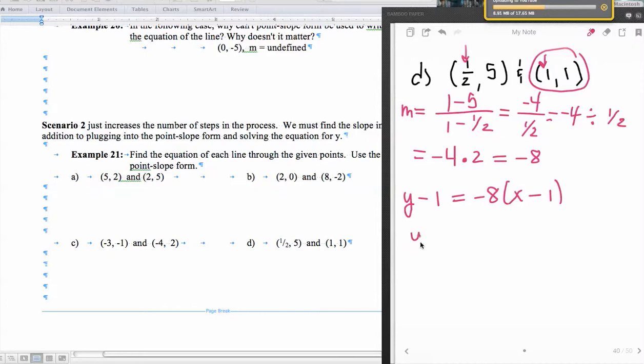And now I'll simplify. So y minus 1 is equal to, distributive property happens here and here. So negative 8 times x, which is negative 8x. And then negative times a negative, which is positive. So that's a positive 8. And then we're going to move the constant over. So we'll add a 1 here and we'll add a 1 here. And then we have y is equal to negative 8x and then plus 8 plus 1, which is 9.